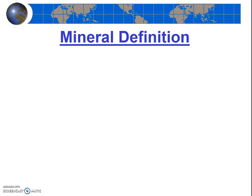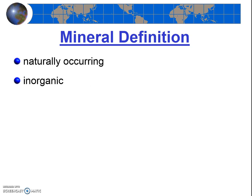First, what is a mineral? Five things need to be true for a substance to be labeled a mineral. A mineral must be naturally occurring and inorganic, which means no carbon-hydrogen bonds. This eliminates coal and other material made from plants.